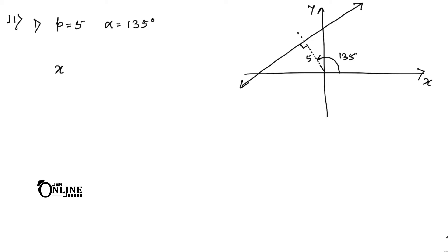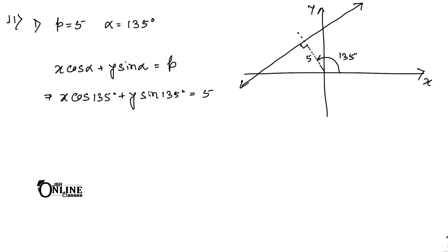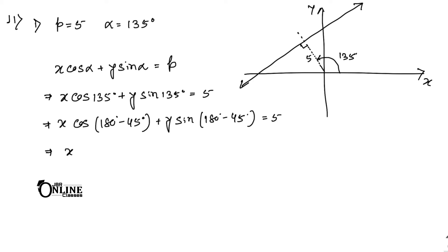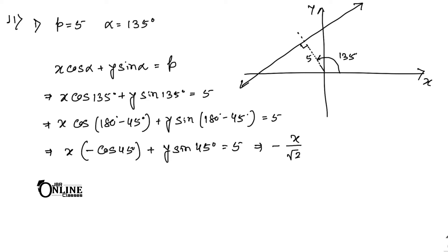According to the formula: x·cosα + y·sinα = p. So here x·cos135° + y·sin135° = 5. Writing 135° as (180° − 45°): cos(180° − 45°) = −cos45° and sin(180° − 45°) = sin45°. So we get −x/√2 + y/√2 = 5, which gives y − x = 5√2 as the answer.